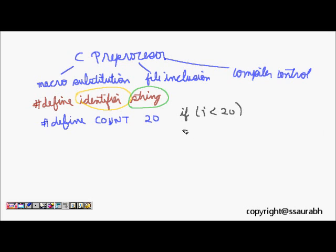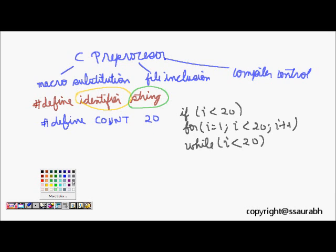If i is less than 20, then do something. For i less than 20, i++. While i is less than 20, do something. For all these kinds of code, I can now replace this by COUNT.